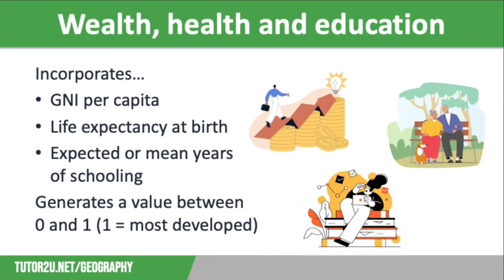The HDI incorporates the following: wealth, using gross national income per capita as a measurement of whether people have a decent standard of living; health, using life expectancy at birth as a measure of whether people are living long and healthy lives; and education, using expected years of schooling for children of school entering age, and mean years of schooling for adults aged 25 and over, as a measure of whether people are knowledgeable.